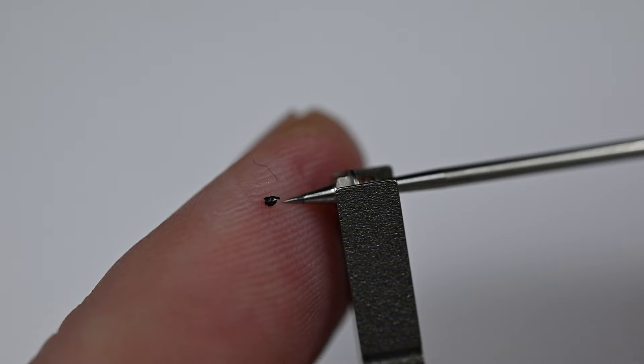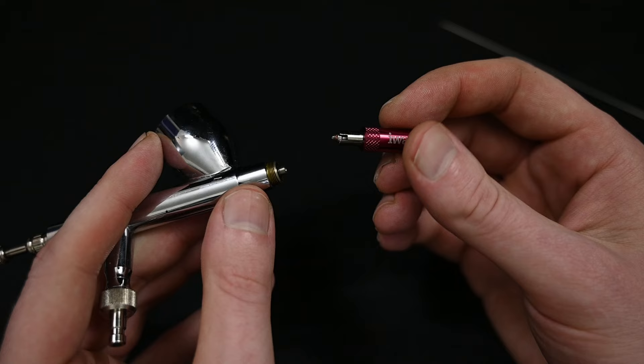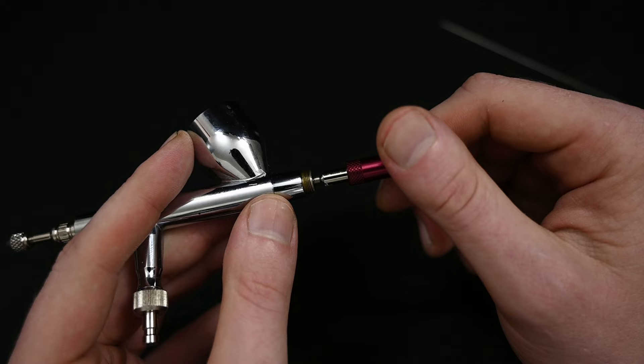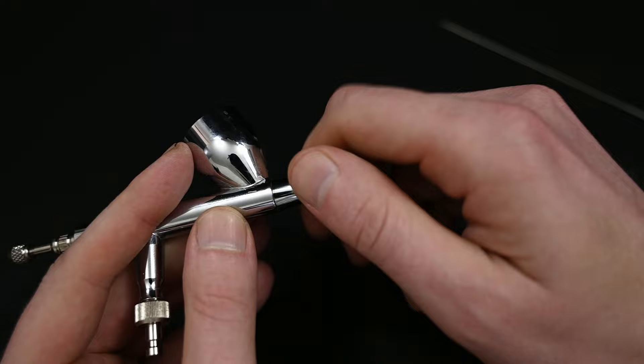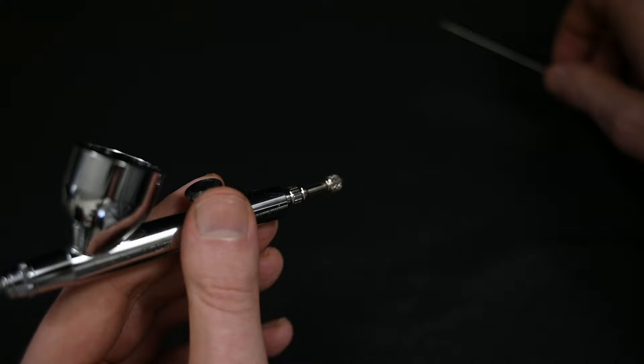Then once this clog was out, the airbrush was spraying like new again. Then I just needed to put the airbrush back together. So I used this tool which holds the nozzle so I could place it on and then screw it back in place. When you screw in a nozzle like this, you can't use any pressure. You have to do this very, very lightly. Nozzle threads are very soft, and if you use too much pressure, it's pretty easy to break it. Then screw back on the air cap, reinsert this needle, and this airbrush is back to spraying like it's supposed to.